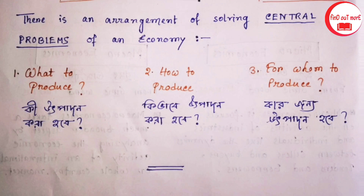There is an arrangement for solving the central problems of an economy. The economic circuit is the most important part of economics — that is: what to produce, how to produce, and for whom to produce.